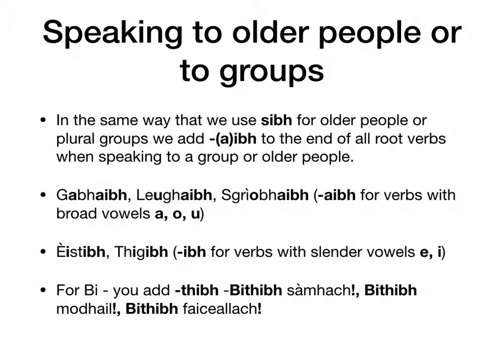Now when you're speaking to older people or groups of people — in the same way that there's 'tapadh leibh' and 'tapadh leat', and we use 'sibh' for groups or older people — that also applies to the verbs you use. At the end of all root verbs, the sound '-ibh' or '-aibh' comes on. When the last vowel in the verb is a broad vowel (a, o, u), you write '-aibh'; for example: gabhaibh, leughaibh, sgrìobhaibh. Whereas if the last vowel is a slender vowel (e, i), it'll be '-ibh': èisdibh, thigibh. It's the same sound but spelt differently to maintain Gaelic's broad-to-broad, slender-to-slender rule.